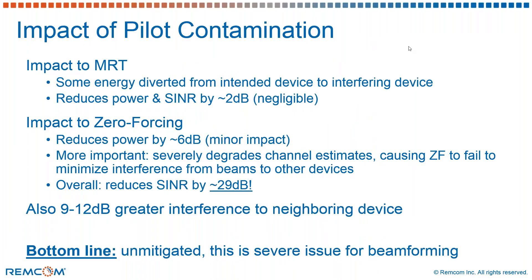Looking at the overall summary of the results, the impact to MRT was about 2 dB to both the power and the SINR. For zero forcing, it was about 6 dB loss in power, but an average of about a 29 dB loss in the SINR, greatly degrading the performance of this beamforming system. In addition, there was an increase of about 9 to 12 dB interference to that neighboring device caused by the base station, both by MRT and zero forcing, directing more energy into the device in the neighboring cell without realizing it.